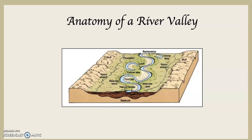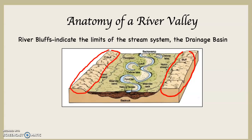You may hear me say this again: just like you have an anatomy — a skeletal structure, circulatory system, nervous system, and so on — so too there is an anatomy of a river valley. Every river valley will not have all of these features, but some river valleys will have all the features I want you to know. Let's take a look at them.